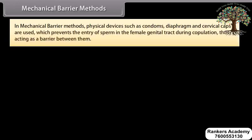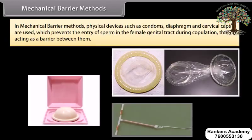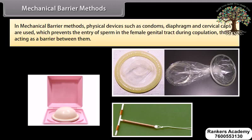In mechanical barrier methods, physical devices such as condoms, diaphragm, and cervical caps are used, which prevent the entry of sperm in the female genital tract during copulation, thus acting as a barrier between them.